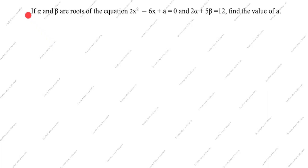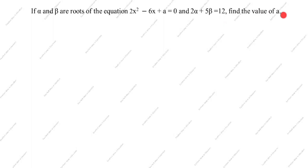Hi friends, welcome to my channel Excellent Ideas in Education. Today we are going to solve this polynomial problem: if alpha and beta are roots of the equation 2x² minus 6x plus a equals 0, and 2 alpha plus 5 beta equals 12, find the value of a.